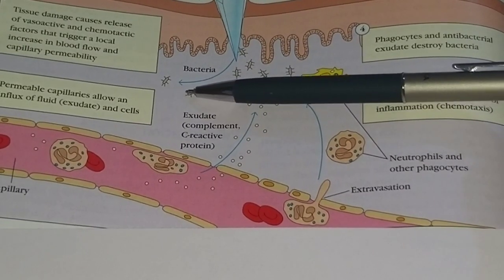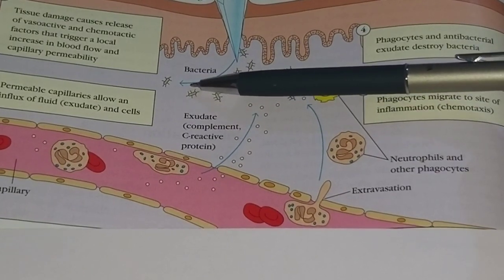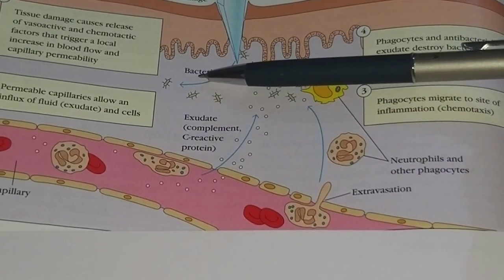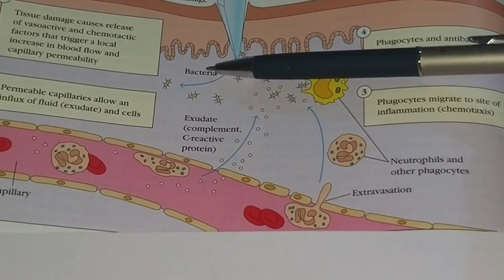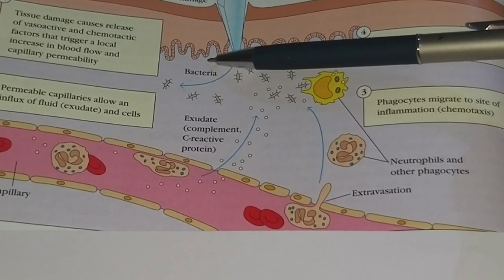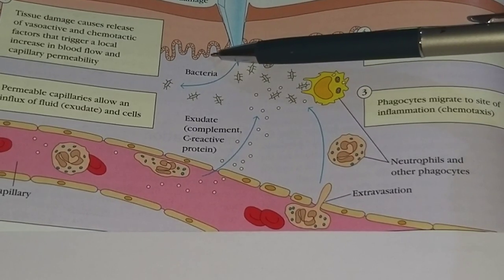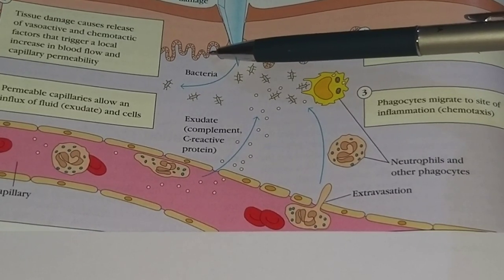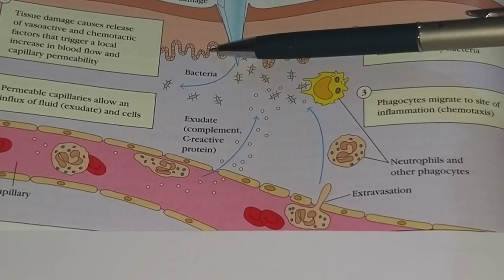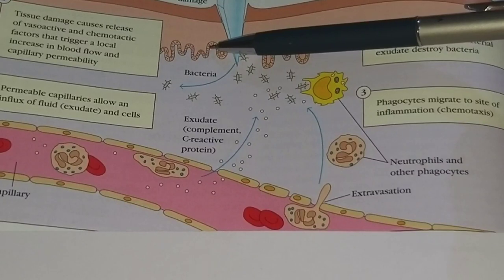Now let us discuss the mechanism of induction of the inflammatory response. Just after tissue injury, vasodilation takes place. Vasodilation means an increase in vascular diameter. This causes a rise in blood volume in the area, and due to this high volume of blood, tissues get heated up and the color becomes red.